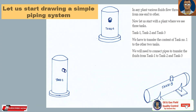In the hand-drawn figure you can see on your screen, we have two vertical tanks and one horizontal tank to be connected with a piping system. Now let us start.